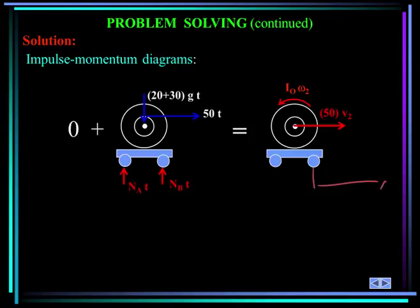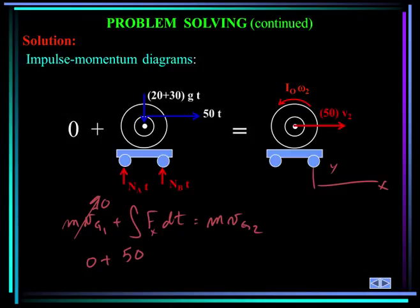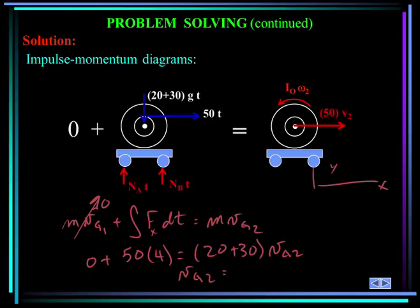Establishing an X-Y coordinate system, with motion in the X direction, the linear impulse-momentum equation gives: zero (started from rest) plus 50 N × 4 s equals (20 + 30) kg × v_2. So the velocity of the mass center at state two is 4 meters per second. This is the impulse-momentum equation applied in the X direction for both the reel and the cart.